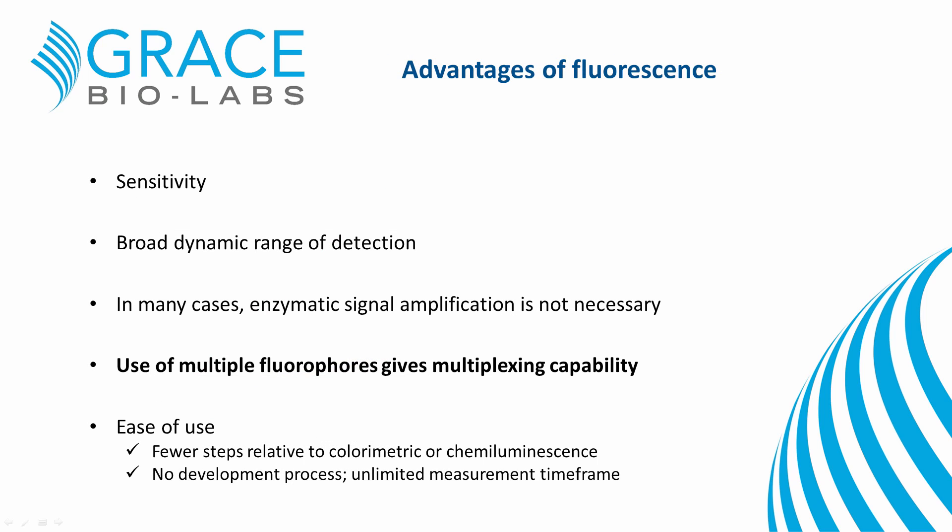Fluorescence as a label for immunoassays holds many advantages. It is widely used because of its high sensitivity, a large dynamic range — typically more than a million to one — and its relative ease of use compared to colorimetric and chemiluminescence detection. Remarkably, fluorescent emission is much brighter on PNC surfaces compared to glass. By examining the geometry of the film surface, we can understand how it affects our ability to detect fluorescence. In addition, fluorescence allows for level 3 multiplexing.